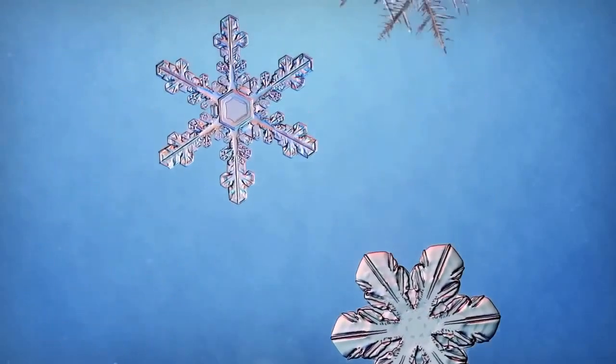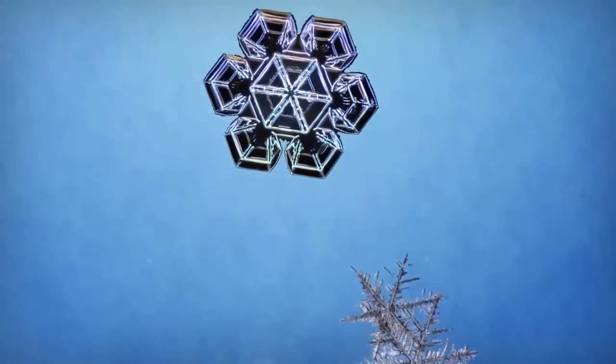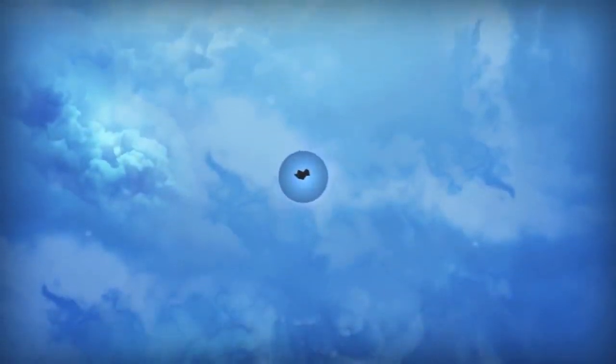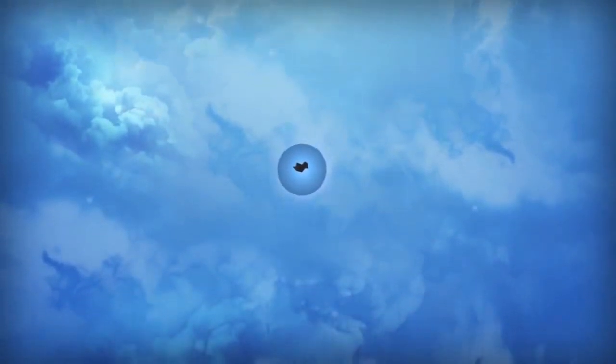No two snowflakes form in the exact same way, but here's a possible set of steps. A snowflake starts as a dust grain floating in a cloud. Water vapor in the air sticks to the dust grain and the resulting droplet turns into ice.